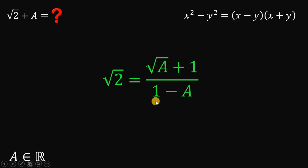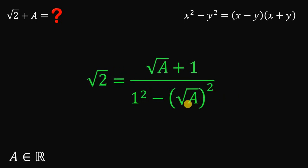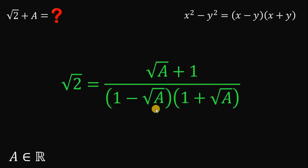Take note that this 1 is 1 squared, and this a can be rewritten as square root of a, quantity squared. Now we have a square number minus another square number, so we can apply the difference of squares. Therefore, 1 squared minus square root of a, quantity squared, can be factored as 1 minus square root of a, multiplied by 1 plus square root of a.